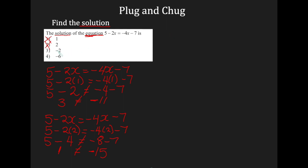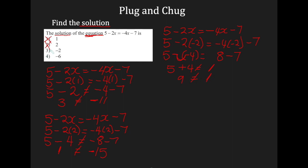Let's try 3 — we're hoping our answer is negative 2. I write my equation: 5 minus 2x equals negative 4x minus 7. I plug in negative 2: 5 minus 2 times negative 2. Remember, neighboring negatives come together and form a positive, so that's 5 plus 4, which is 9. On the right-hand side, negative 4 times negative 2 is positive 8, minus 7 equals 1. Since 9 does not equal 1, my answer is not 3.